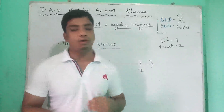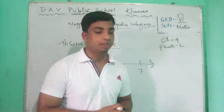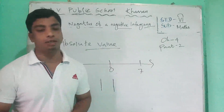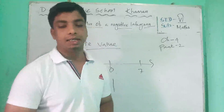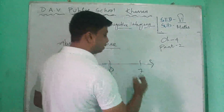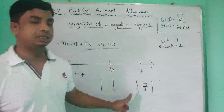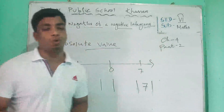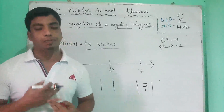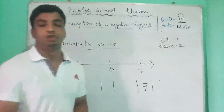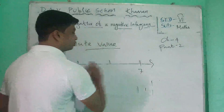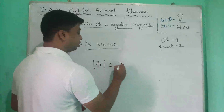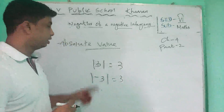The absolute value of a number may be considered as the distance of that number from 0, without regard to direction. This symbol is used to denote the absolute value of an integer. The absolute value of 7 is indicated by this symbol. It should be noted that both plus 7 and minus 7 equal 7 in absolute value, since both represent a distance of 7 units from 0. The absolute value is always a positive integer — for example, absolute value of 3 is 3, and absolute value of minus 3 is also 3, not minus 3.